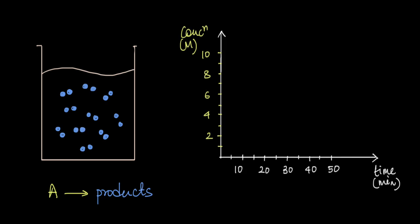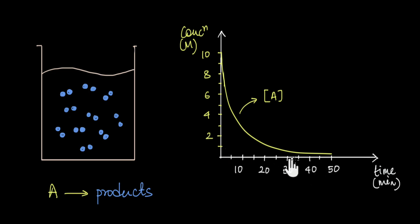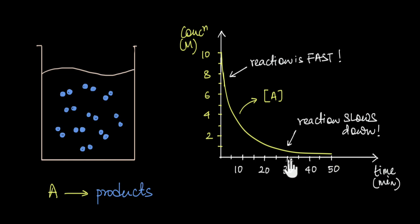So for a typical chemical reaction, if we plot the concentration of the reactant with respect to time, we get a graph where initially there is a sharp decrease in concentration, but as time progresses the change in concentration slows down. This is because initially the rate of conversion was fast, but with time this rate slows down.